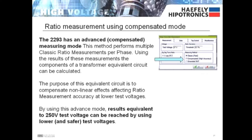The 2293 implements an advanced compensated measuring mode where it performs several pre-checks to determine the transformers real RLC properties and compensates for these nonlinear properties to provide highly accurate results. By using this advanced mode, results equivalent to using 250 volt test voltage can be reached by using much lower and safer test voltages.